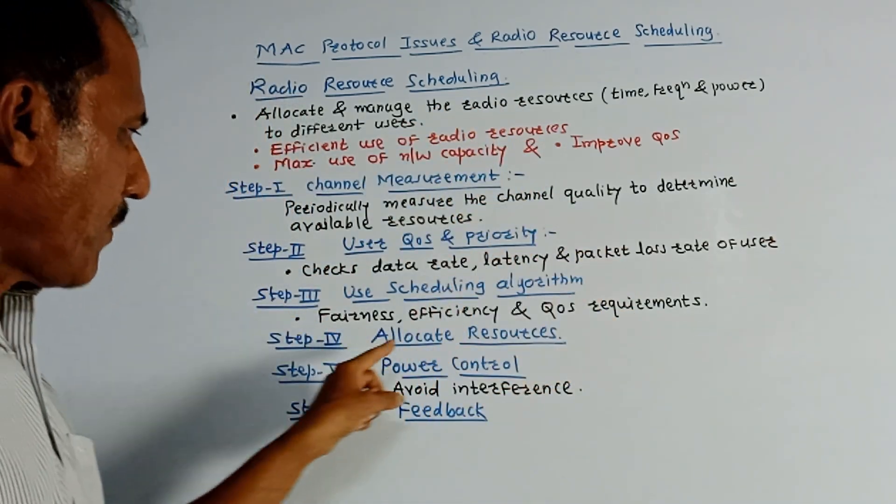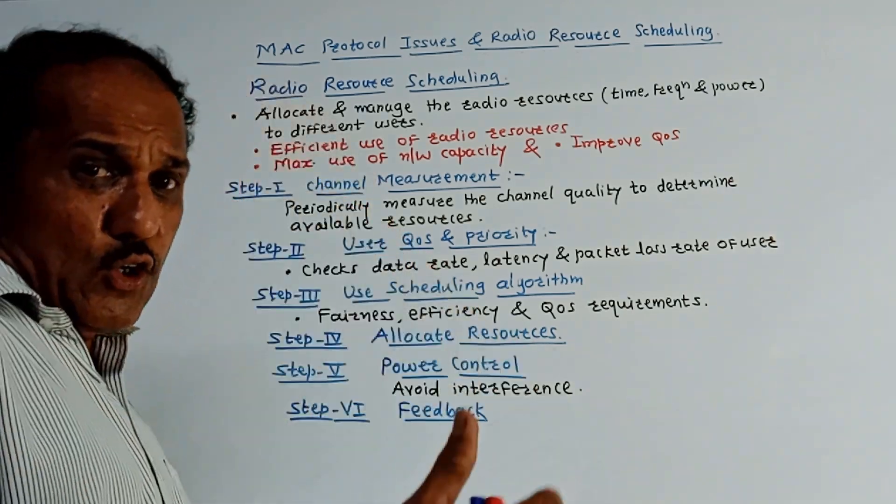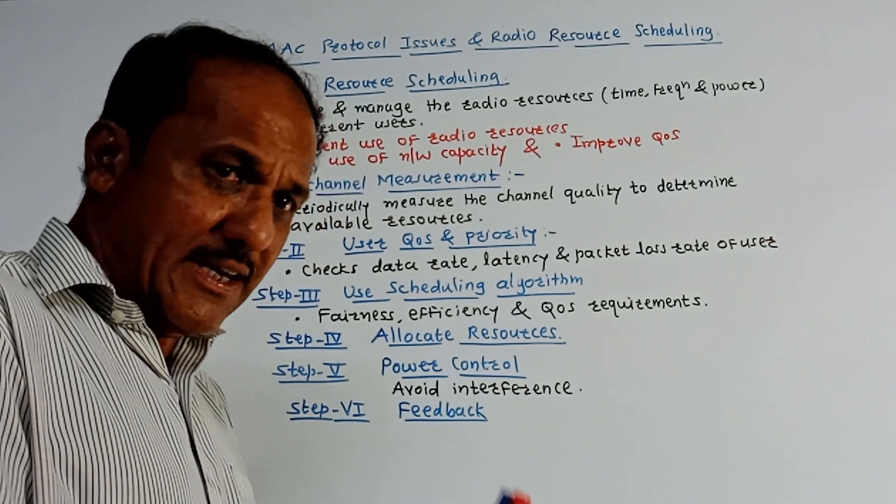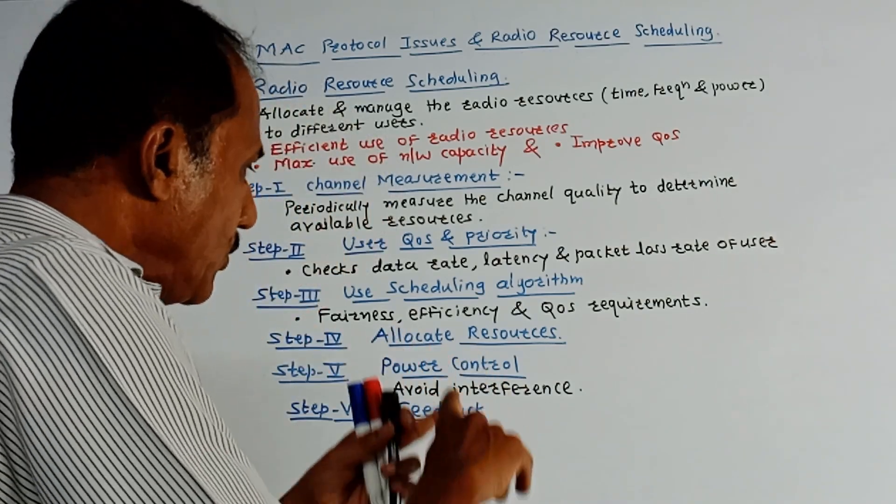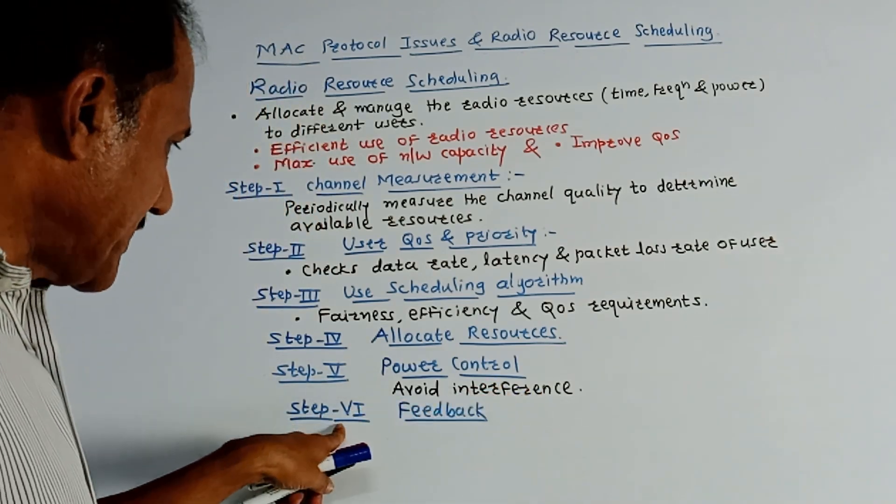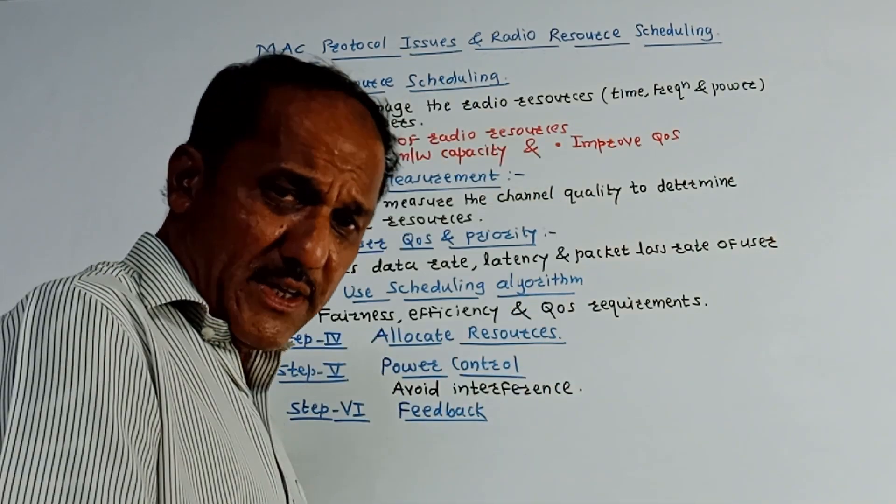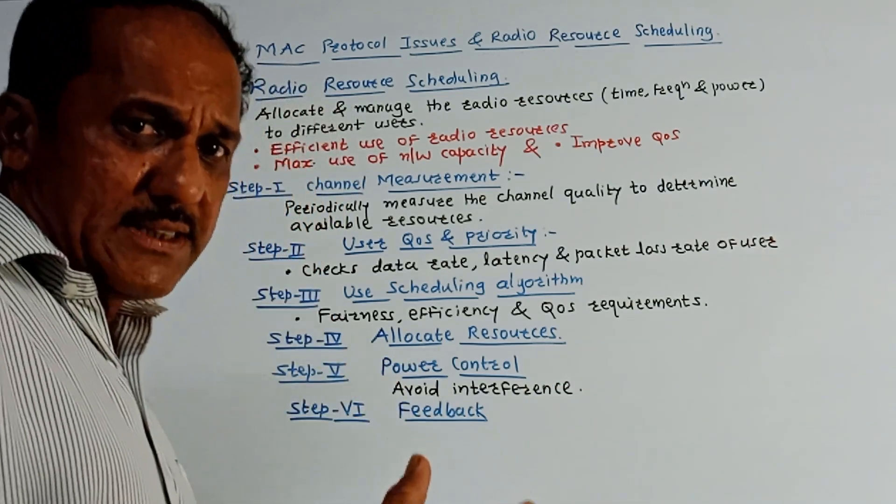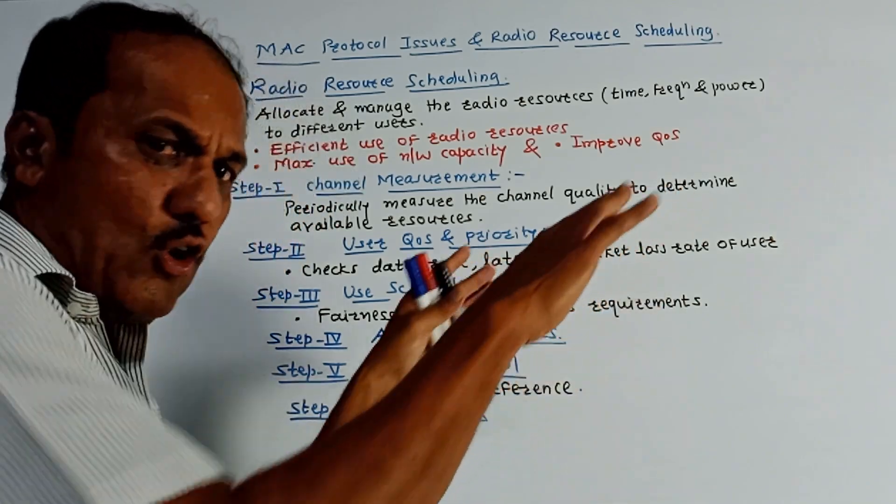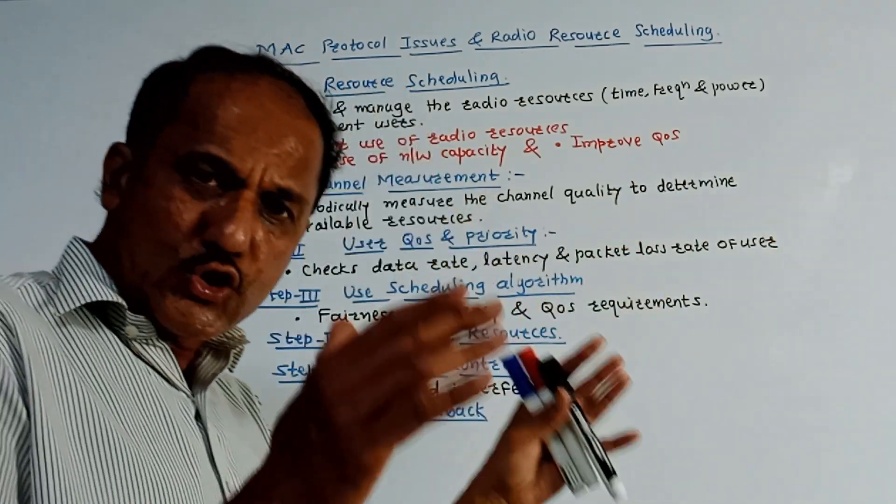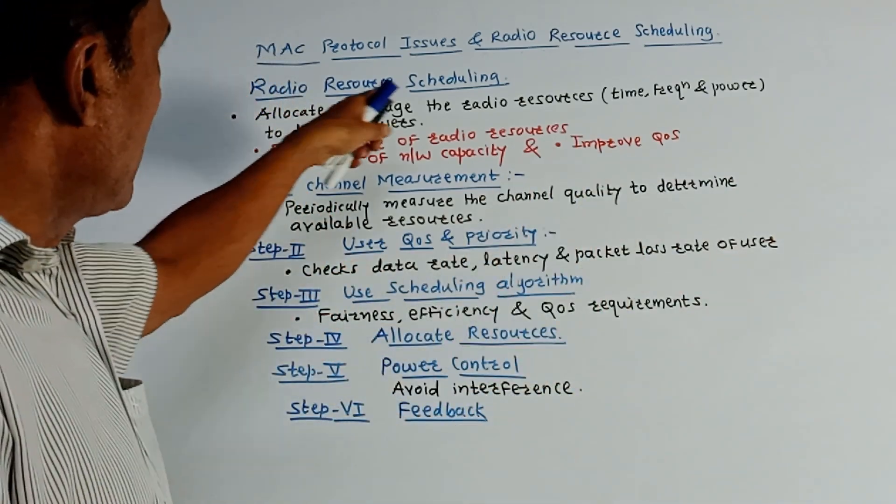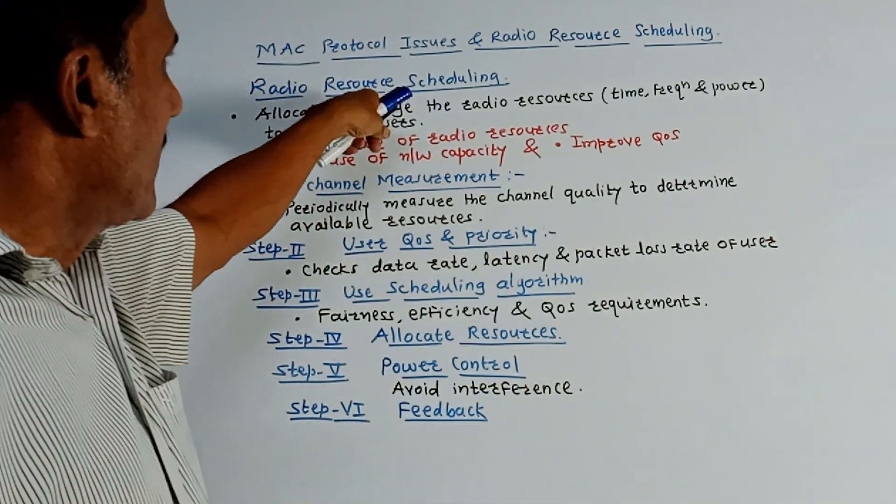Step 5: power control. This is an important step. Power control is required in order to make efficient use of the channel as well as it is useful to reduce or to avoid the interference. And step 6: always take a feedback from the user about the quality of service and all such parameters and then make the modifications according to the requirement. This stage is also called feedback and adaptation stage. So this is about radio resource scheduling.